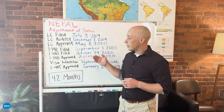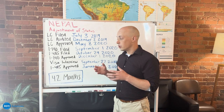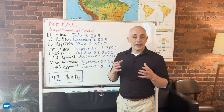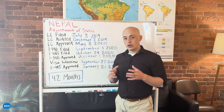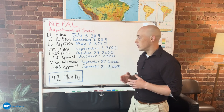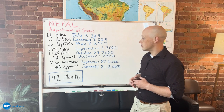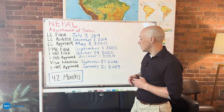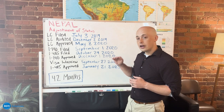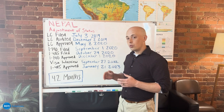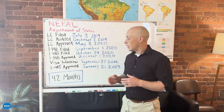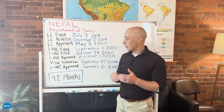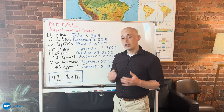Along with the I-140, you and the attorneys will file an I-485, which is the actual green card application in your EB-3 process. This I-485 was filed on October 29 of 2020. Shortly after that, the I-140 was approved.